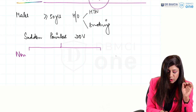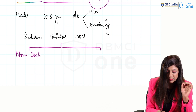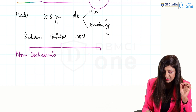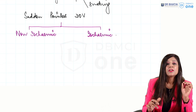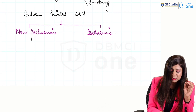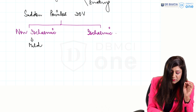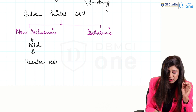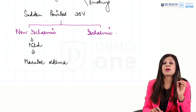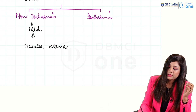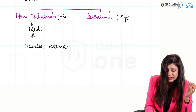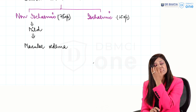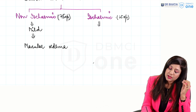The first type, which is more common, is the non-ischemic variety, and the other is the ischemic variety. The non-ischemic variety is present in 75% of cases and the ischemic variety is only 25%. In the non-ischemic variety, you are going to get macular edema with no ischemia.